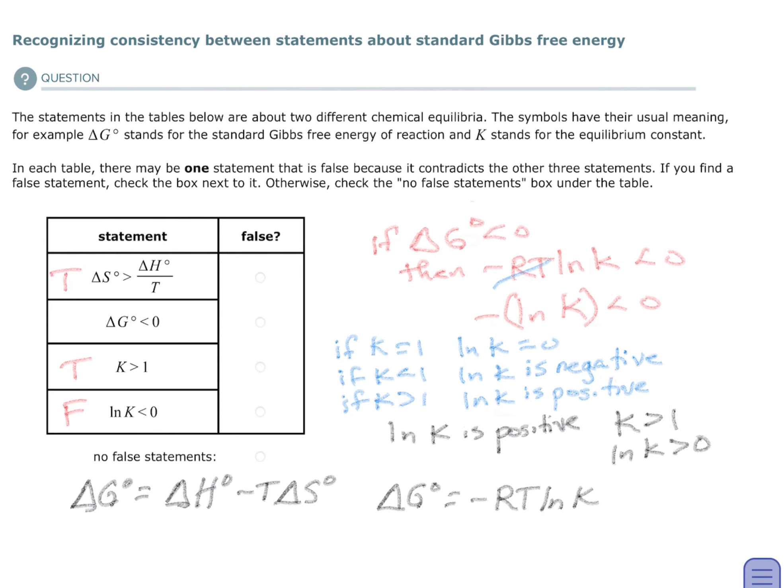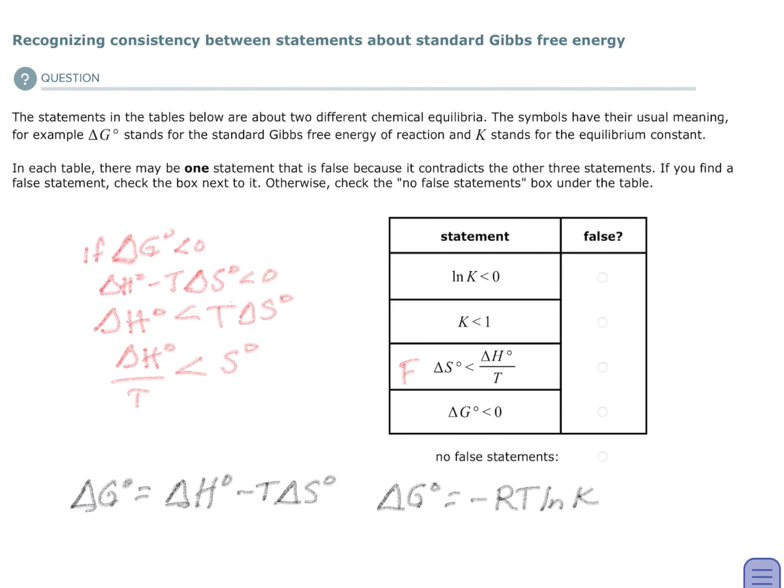All right, so I'm going to go on to the other side. In this other side, I also have, in this case, that the standard Gibbs free energy is less than zero. So I'm going to do the same thing. It says that delta S negative, that should be delta again, delta S is greater than enthalpy over temperature. All right, so I put that as false.